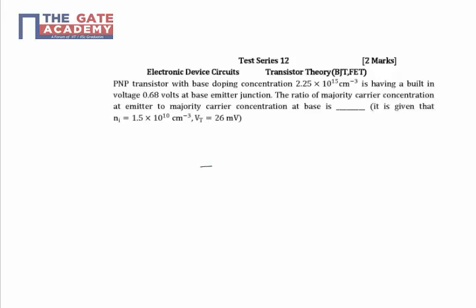In this question, we consider a BJT, which is a PNP transistor. This is emitter, base, and collector.